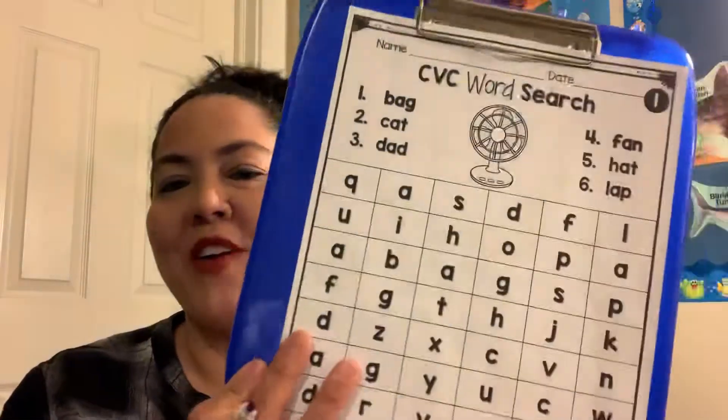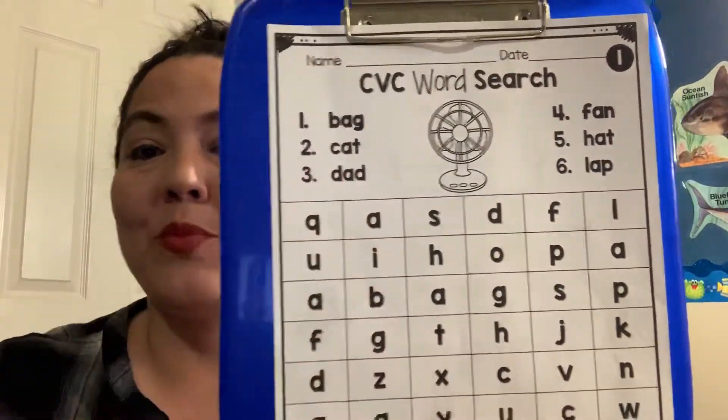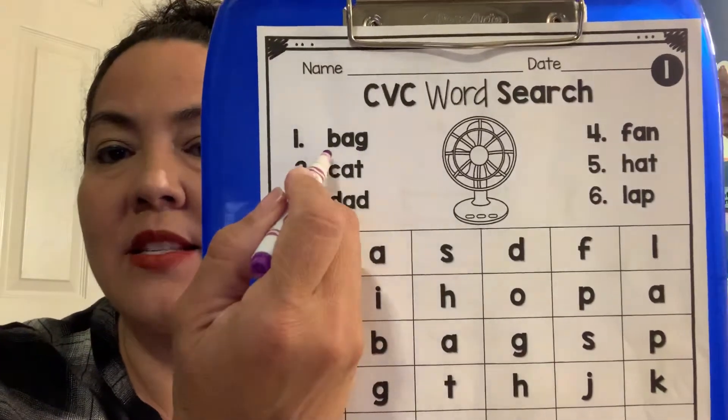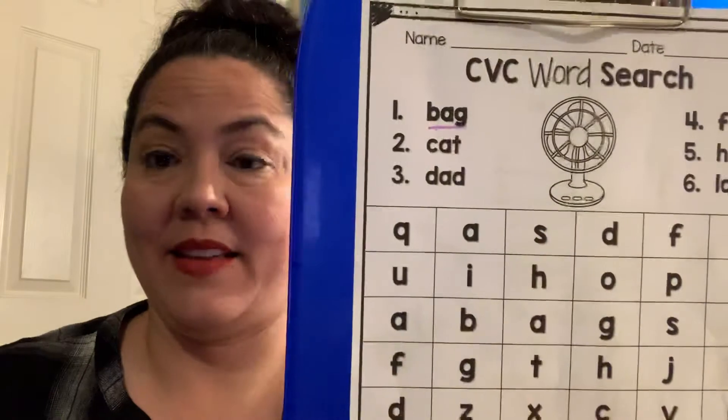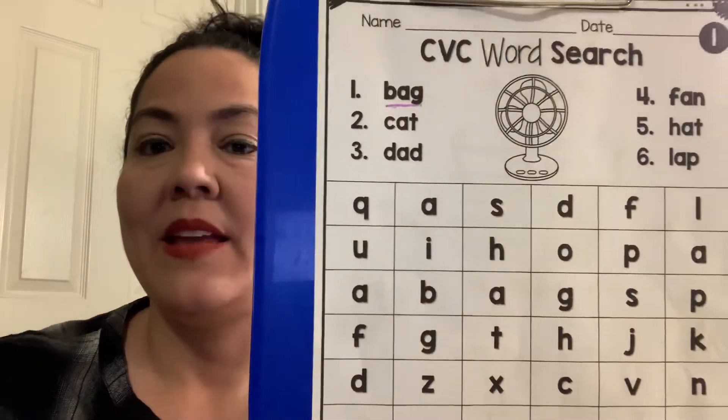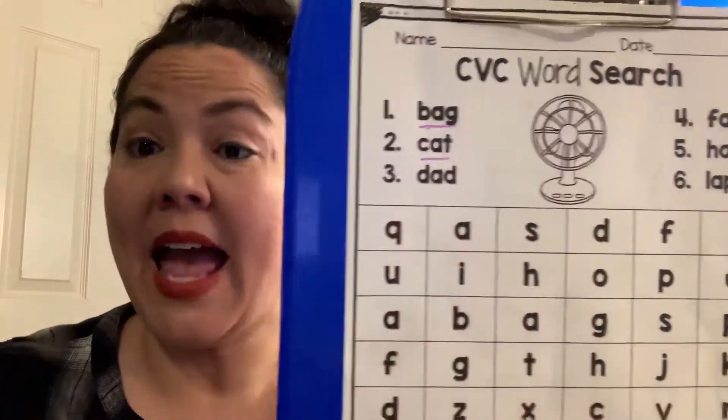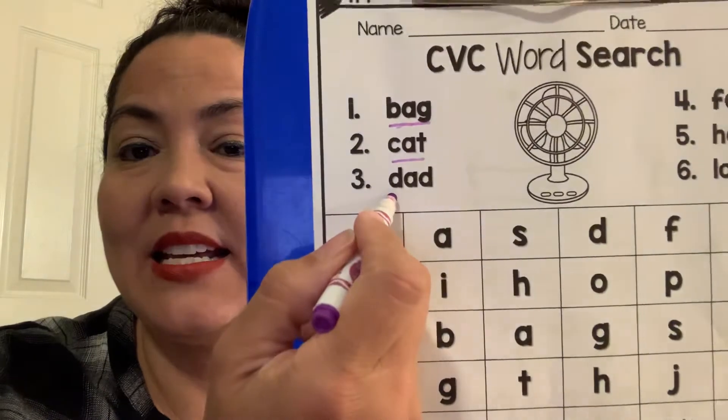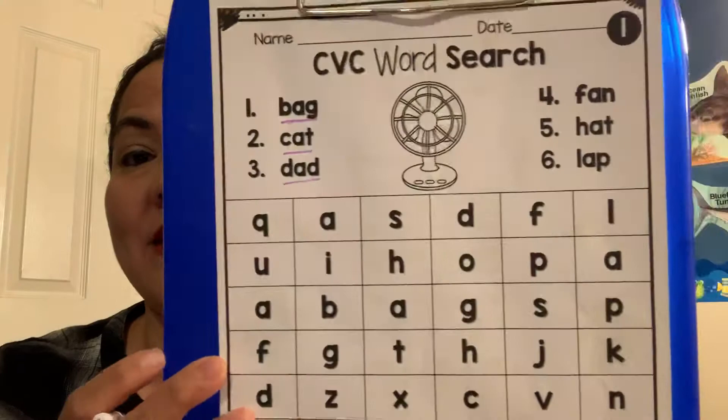Okay. The next thing we're going to do is we have a puzzle to do. And I know you guys like to do puzzles. So we're going to find some words. First, we're going to read our words. We're going to read the first word. It says b-a-g. Bag. Okay? We're going to find bag. Then the next word is going to be c-a-t. Cat. Very good. And then the next word is d-a-d. Dad. Okay? Those are the three words on that side.